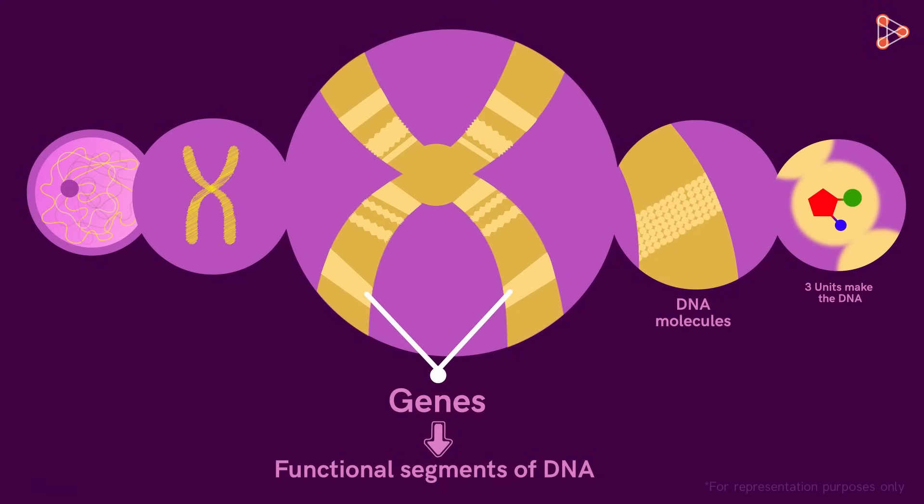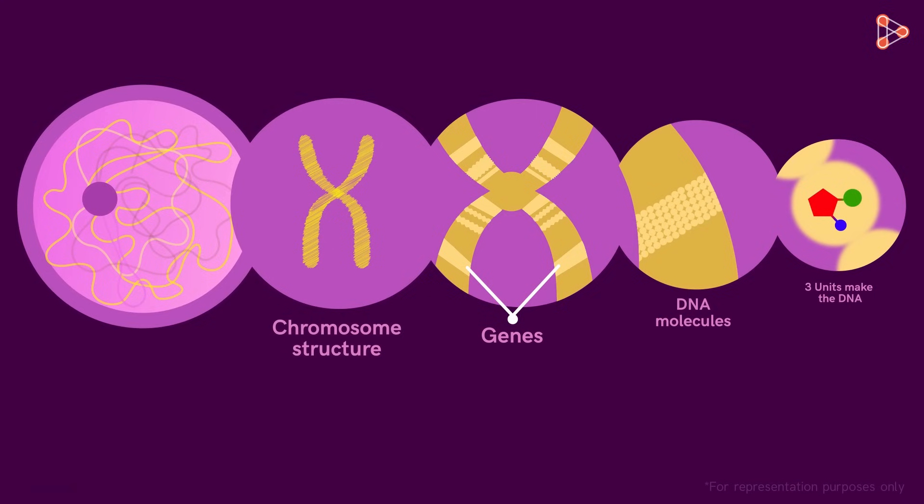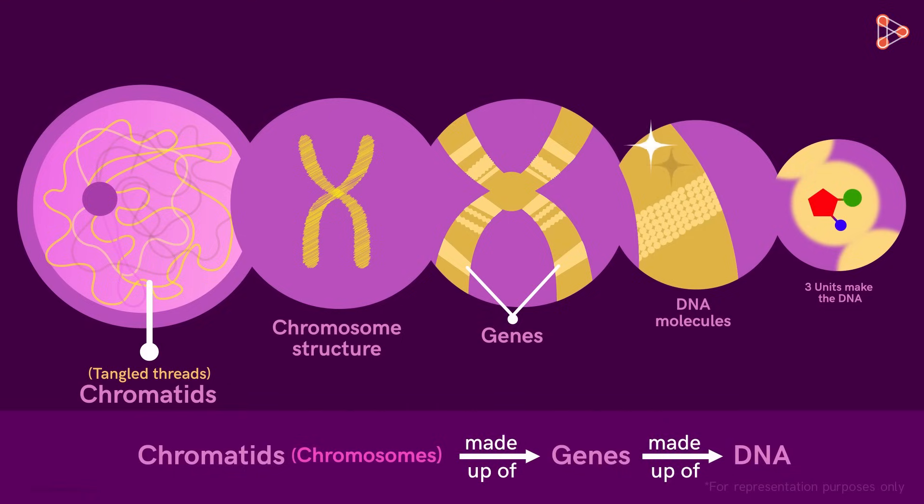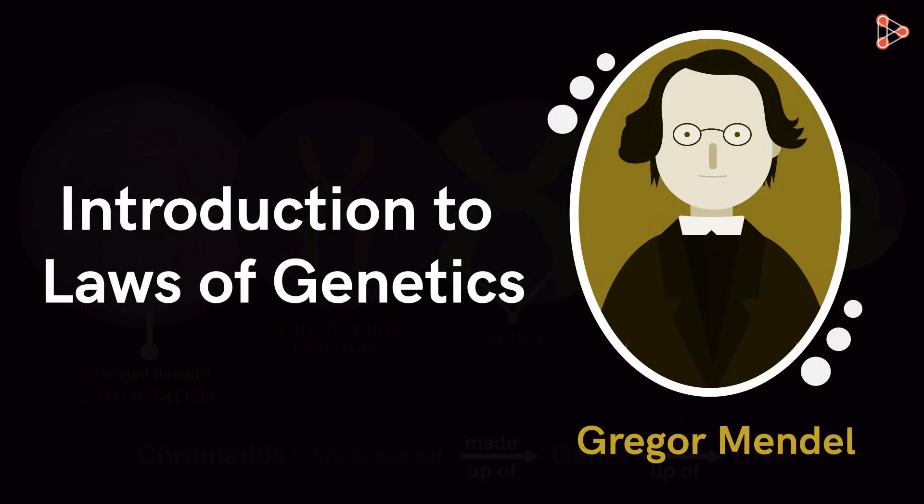And many genes come together to form thread-like structures called chromosomes. Chromosome is the classical structure obtained only during cell division. When the cell is not in the dividing phase, the genetic material is present in the form of tangled threads called chromatids. So this is the basic idea of the genetic materials in our cells, which we needed to understand in order to look at the laws in genetics. Let's get introduced to the laws in genetics put forth by Gregor Mendel in the next part.